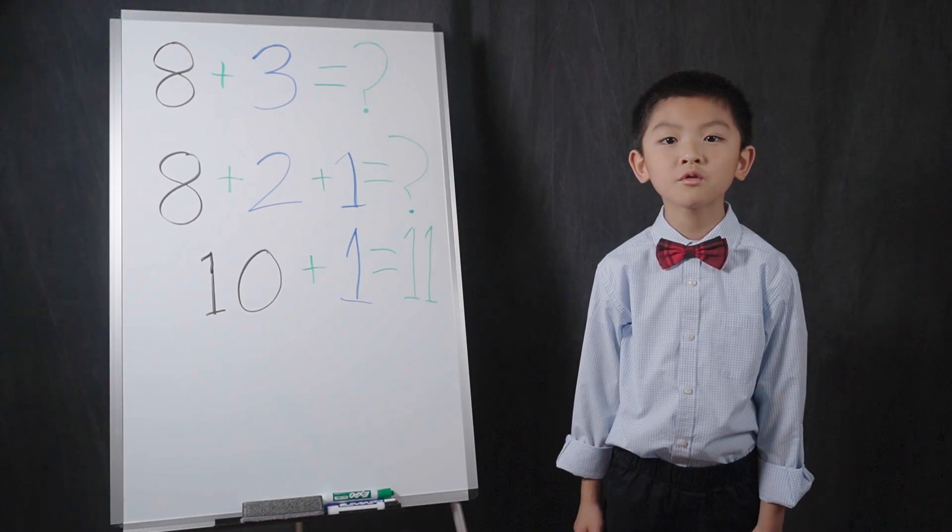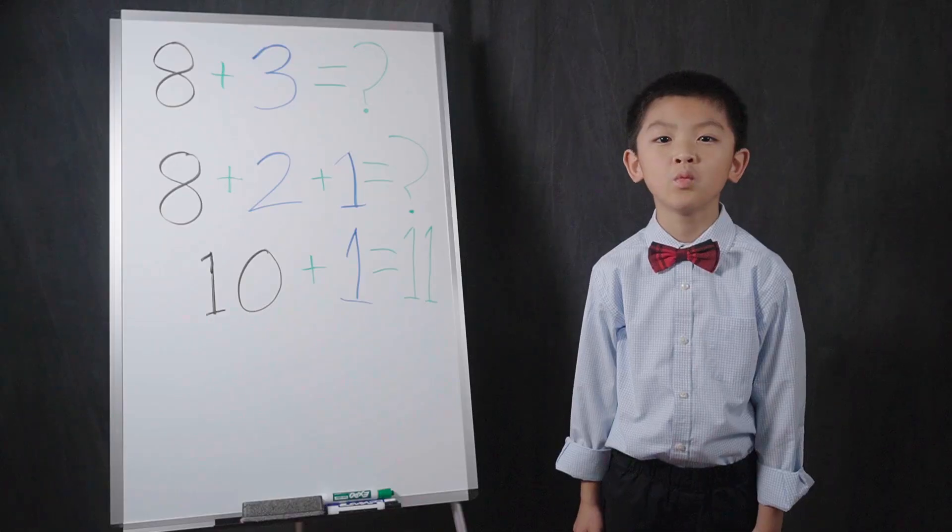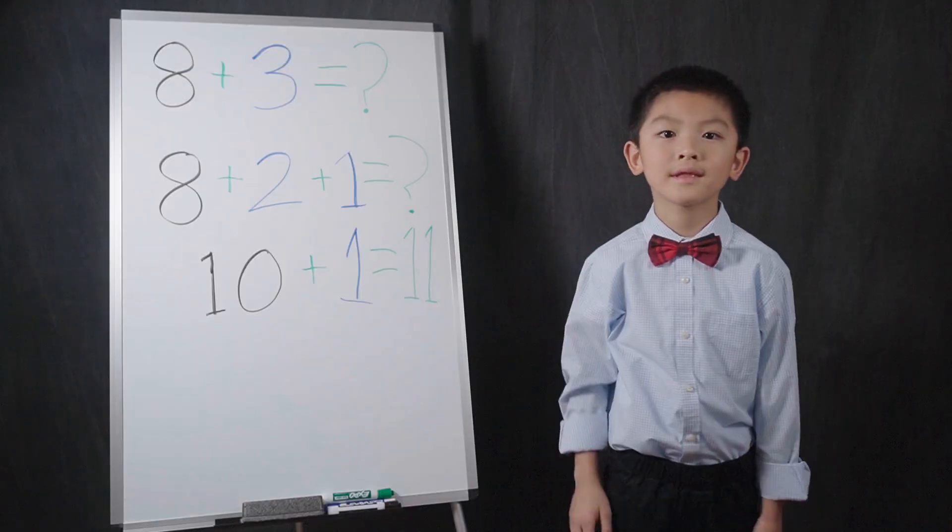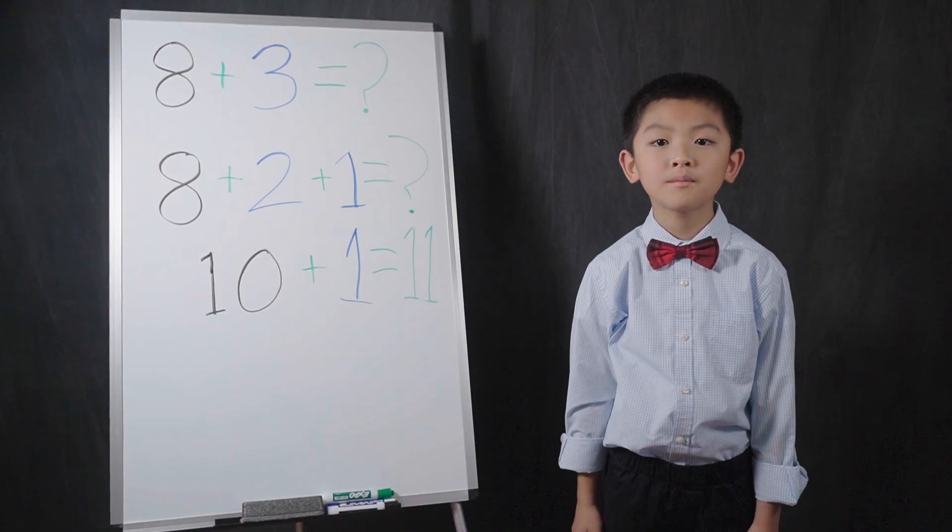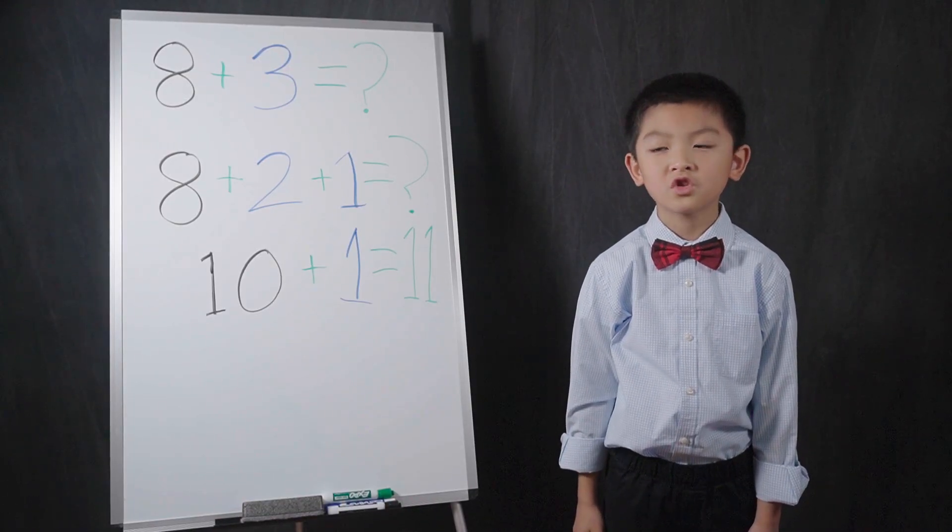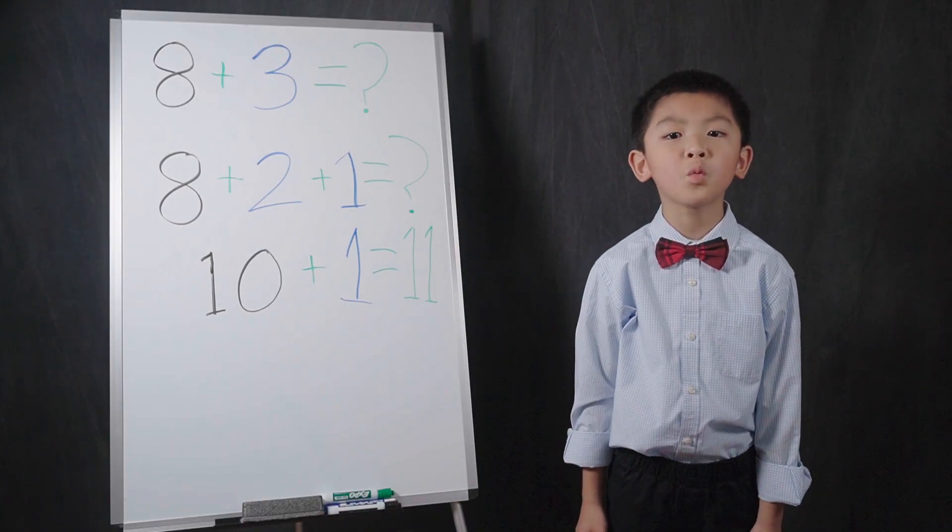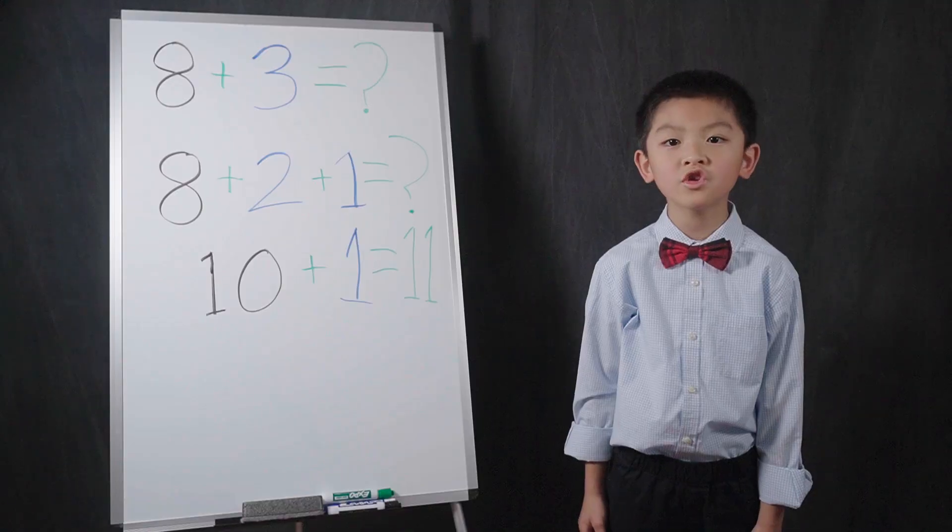So, I broke the 3 into 2 plus 1. 8 plus 3 thus becomes 8 plus 2 plus 1. Then, I combine the 8 and 2, which equals 10. Then, I add the leftover 1 to arrive at a total sum of 11.